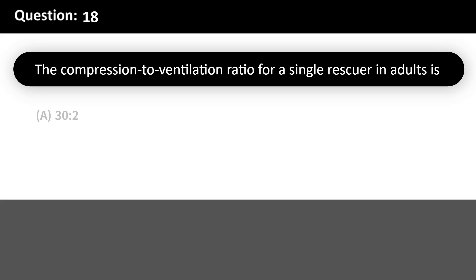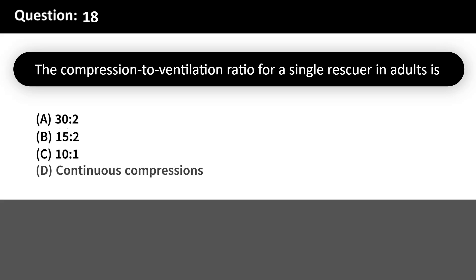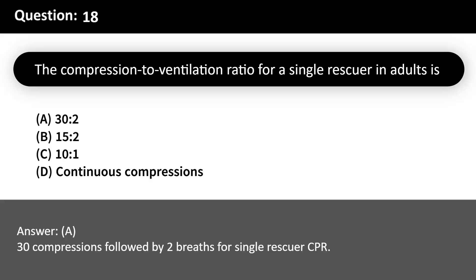The compression-to-ventilation ratio for a single rescuer in adults is: A. 30:2. B. 15:2. C. 10:1. D. Continuous compressions. Answer: A. 30 compressions followed by 2 breaths for single rescuer CPR.